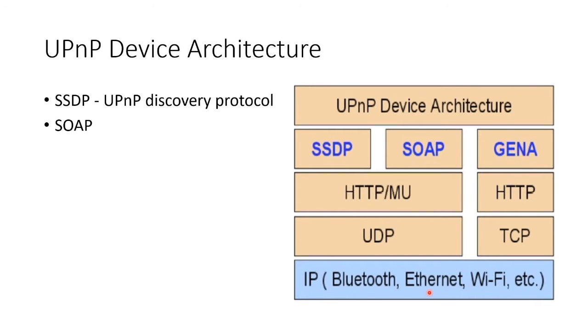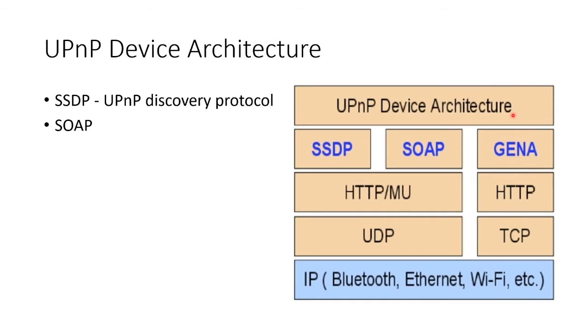It has three components that together make up the Universal Plug-and-Play device architecture. You might recall that UPnP is a way for devices to immediately work on the network together. Those components are the Simple Service Discovery Protocol, SOAP, and something called GENA.